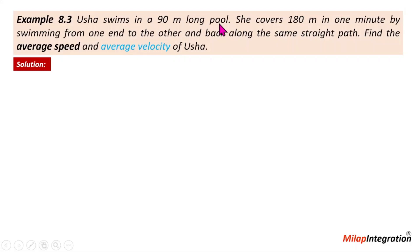Better to write the diagram. In a 90 meter pool, she covers 180 meters in one minute by swimming from one end to the other end and back along the same straight path.